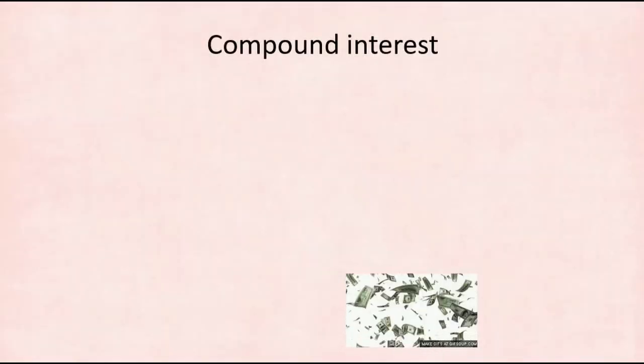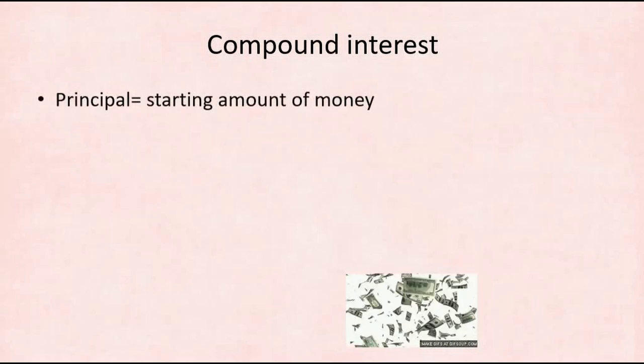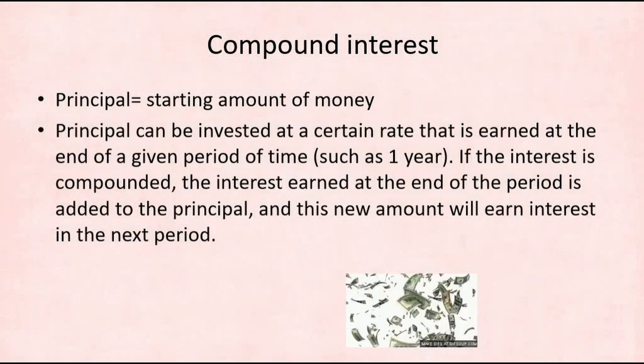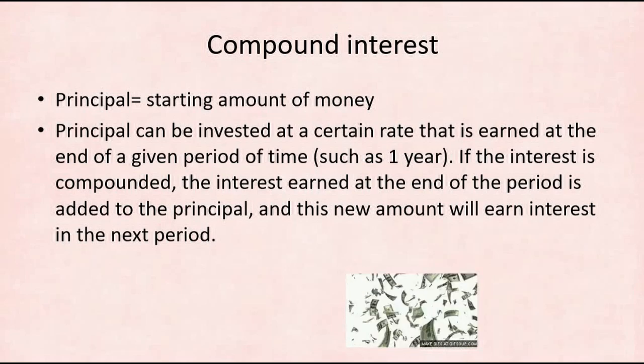Compound interest: The principal is the starting amount of money, which can be invested at a certain rate earned at the end of a given period. If the interest is compounded, the interest earned is added to the principal, and this new amount earns interest in the next period.